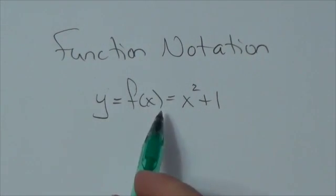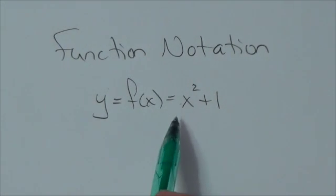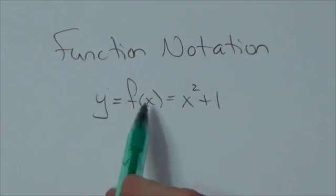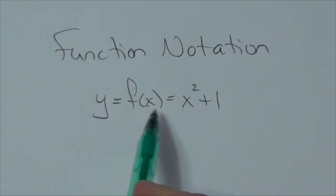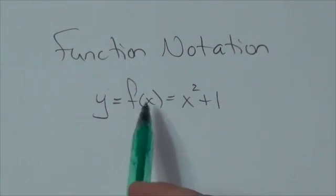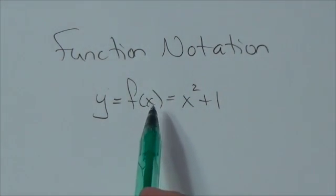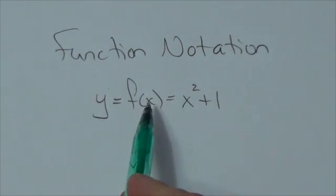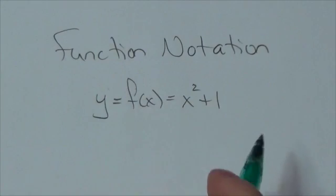So we've got y equals f of x, and we're going to define this to be x squared plus 1. Now remember what that means. The f is naming the function, but the f here stands for the rule: independent variable squared increased by 1. And what's inside here is telling us that the independent variable in this case is just x. So putting those together, x squared increased by 1.